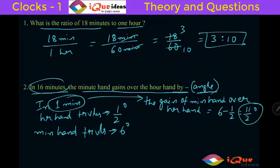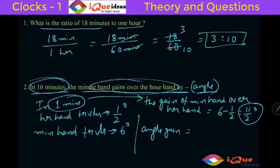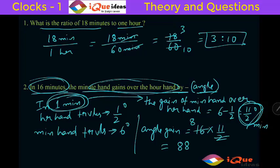In this question, in 16 minutes the required angle gain is equal to 16 into 11 by 2. The 2 cancels 16 eight times. So 8 into 11 is 88 degrees. The minute hand gains 88 degrees in 16 minutes.